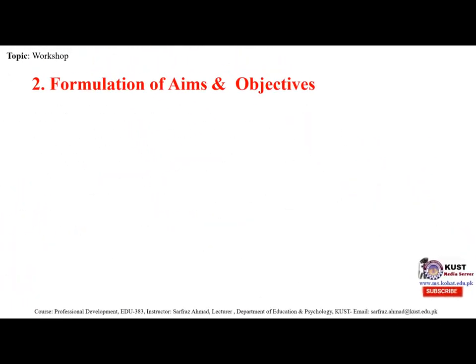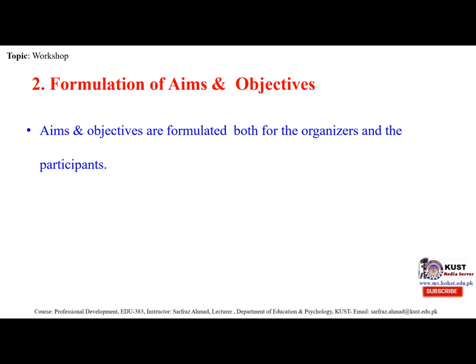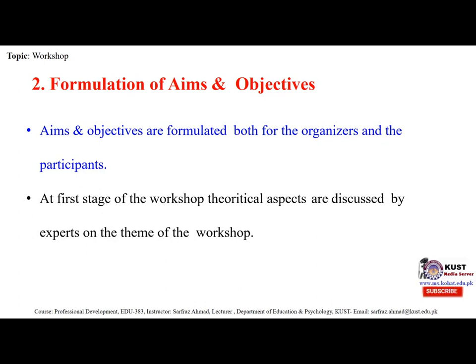The second step is formulation of aims and objectives. Aims and objectives are formulated both for the organizers and the participants. Remember, if you are making aims or objectives, both will be for the organizers and the participants also. At the first stage of the workshop, theoretical aspects are discussed by experts on the theme of the workshop. It is very necessary to discuss each and every aspect of the workshop with the experts, because when you discuss with experts you may gain different angles and perspectives.